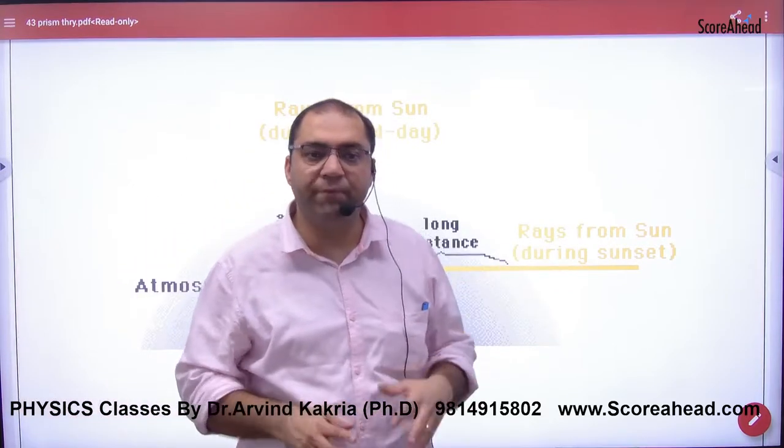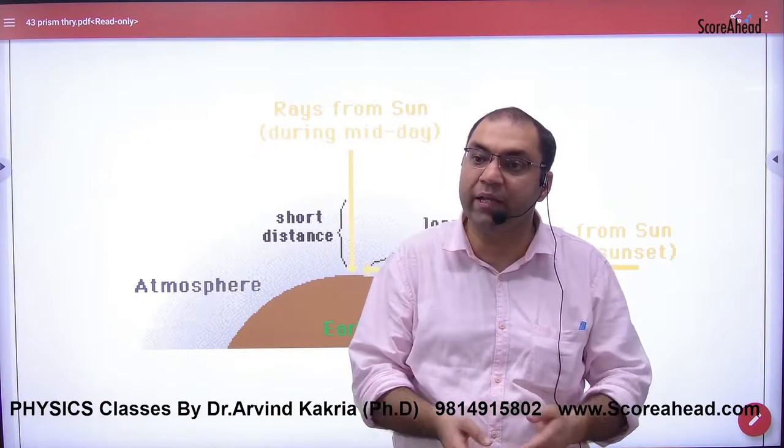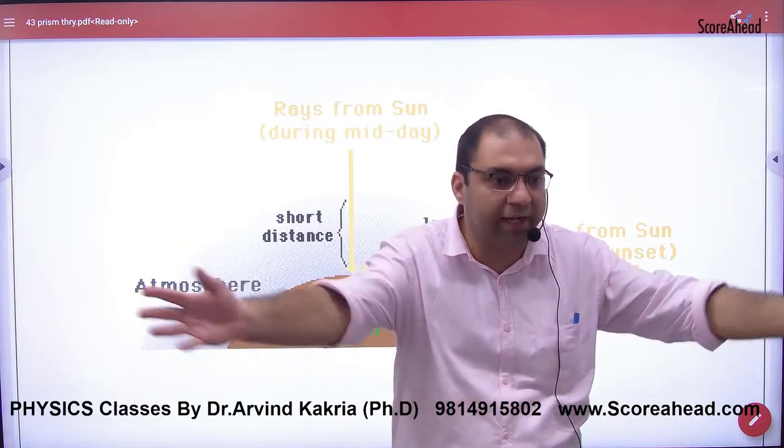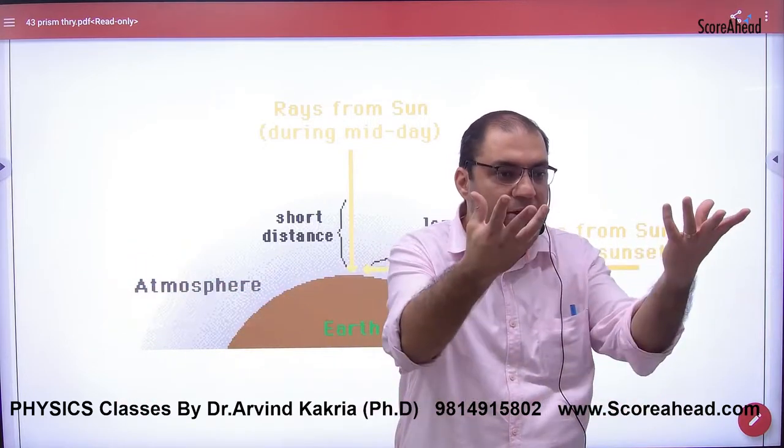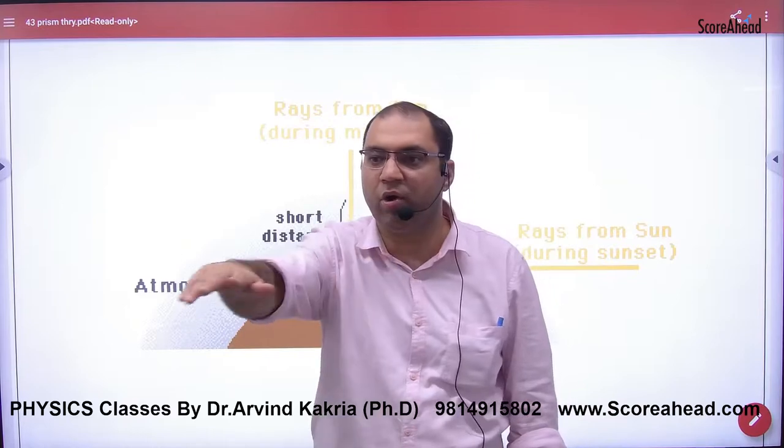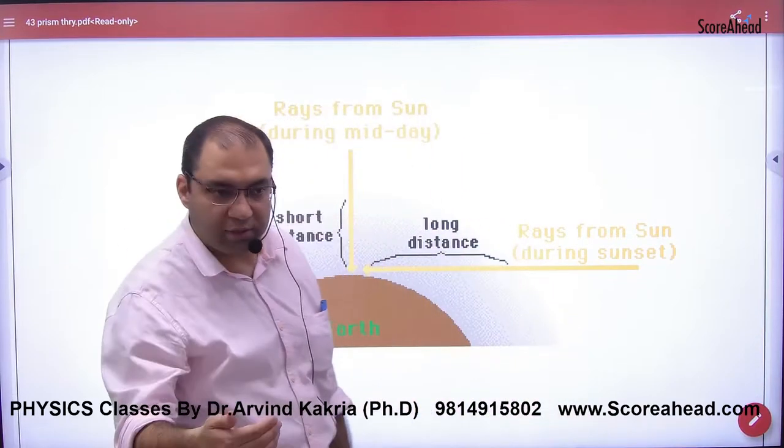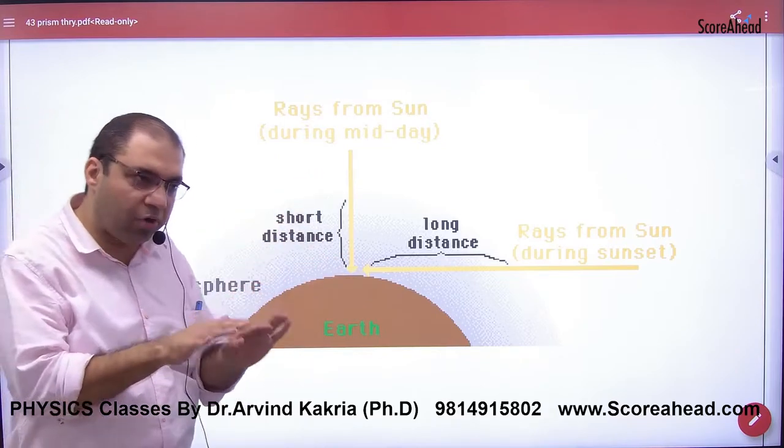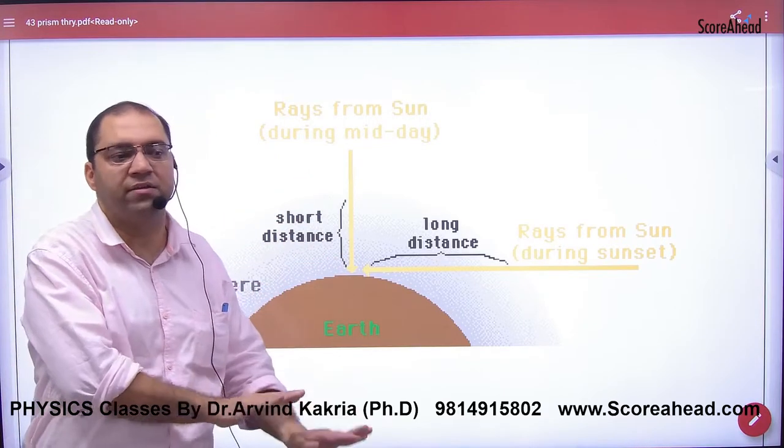In the daytime, blue light scatters more, so blue appears and other colors are hidden. In morning and evening, blue light again scatters heavily, but it covers such a long distance that after scattering repeatedly, it becomes faint. It scatters so much that other colors start becoming visible, so you see lines of orange or red color.